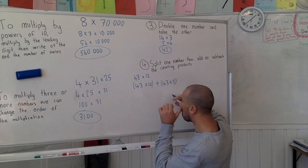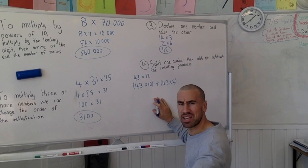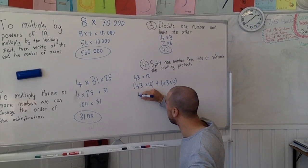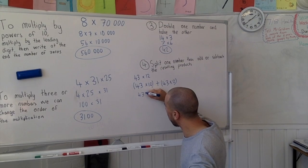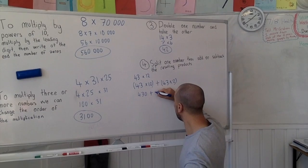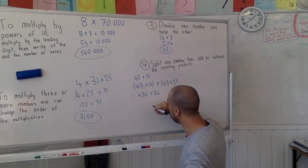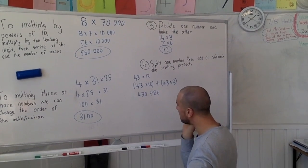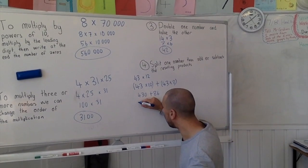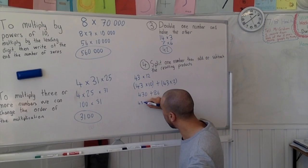Alright, those sums there are slightly easier to deal with aren't they? So 43 times 10 gives us 430 plus 43 times 2 is 86. So 430 plus 86. What we could actually do there to simplify it even further would be go 430 plus 80 plus 6.